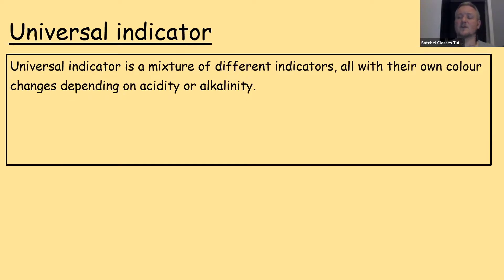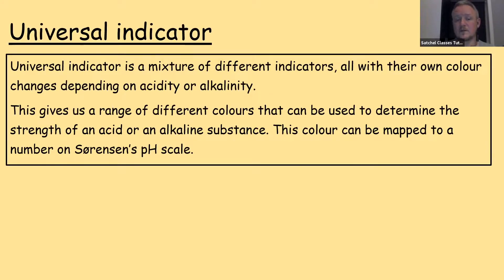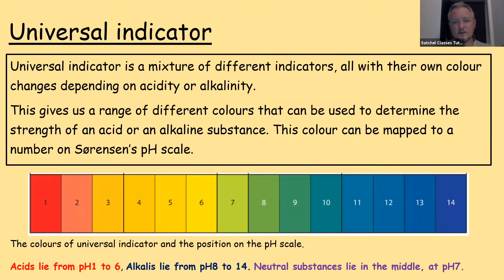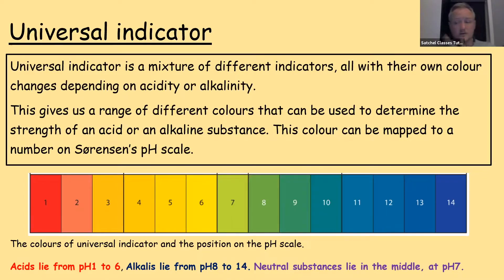Universal indicator is a mixture of lots of different indicators, all with their own colour changes depending on acidity or alkalinity. This gives a range of different colours to determine if something is an acid, neutral, or an alkaline — and in fact how strongly or weakly acidic or alkaline it is. This colour can be mapped to a number on Sørensen's pH scale. Acids lie from pH 1 to pH 6, which is red to yellow. Alkalis lie from pH 8 to pH 14, which is dark green to purpley-blue. Neutral substances lie in the middle at pH 7, with acids on one side and alkalis on the other.